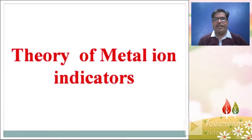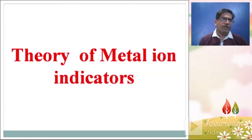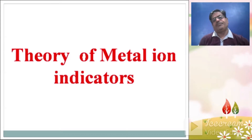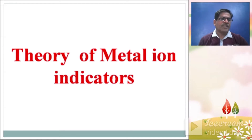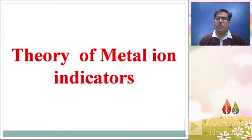Hello friends, today I am going to discuss the theory of metal ion indicators, the principle of metal ion indicators, and examples of metal ion indicators. Indicators are substances which are added to determine the end point. After addition of an indicator, the color may or may not change.